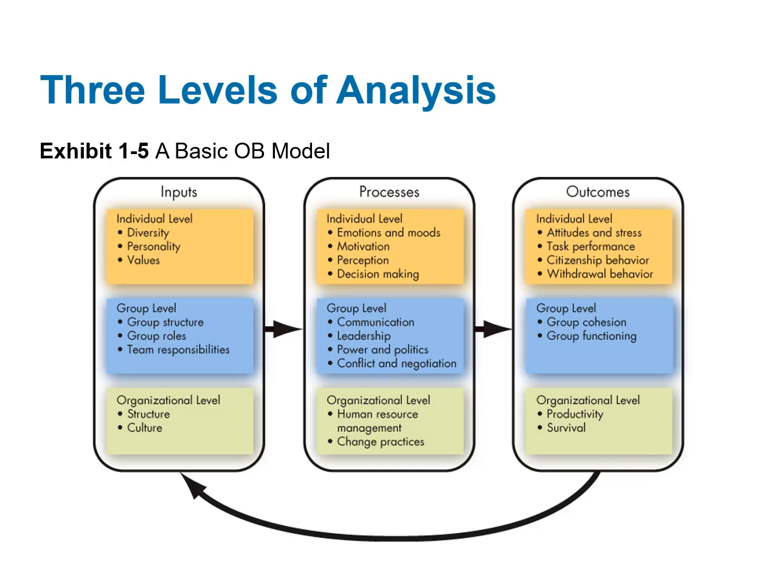In OB, we use a lot of models, which are abstractions of reality — a simplified representation of something that happens in the world. This model attempts to explain how we analyze organizational behavior. We do it at three different levels: yellow is the individual level, blue is the group level, and green is the organizational level.